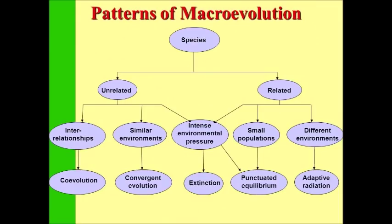As you can see, extinctions can cause macroevolutionary events by giving organisms the opportunity to invade previously filled niches. Thus, we have seen in this series that genetic differences appear in populations, those populations are acted upon by forces such as natural selection and genetic drift, and new species arise. Then those species interact with their environment and other organisms therein, contributing to the vast amount of biological diversity on our planet. So, thanks for watching, and I'll see you next time.